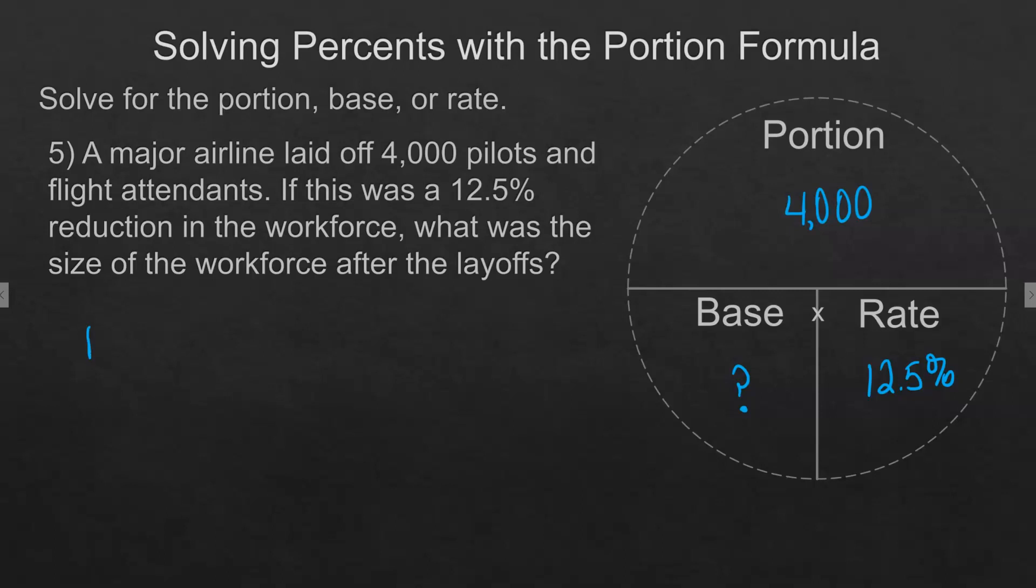Our base is going to be 4,000 divided by 12.5% in decimal form. We take 4,000 and divide it, which gives us 32,000.